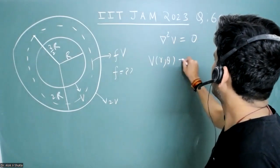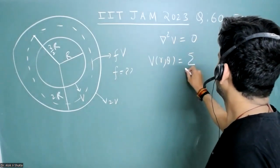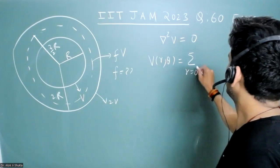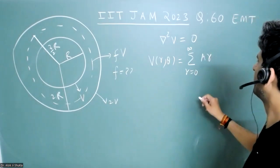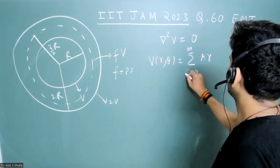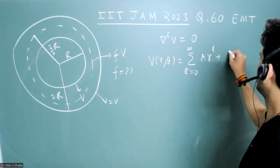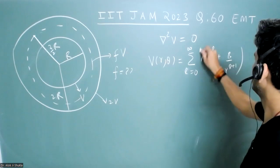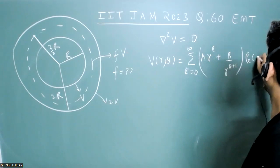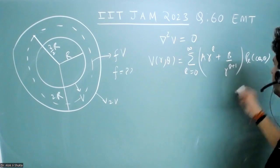V(r, theta) is summation from l equals zero to infinity: a_l times r to the power l plus b_l divided by r to the power l plus one, times P_l(cos theta), where P_l(cos theta) is Legendre polynomial.